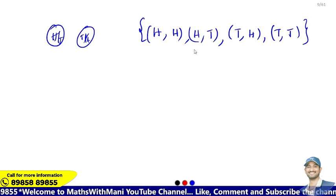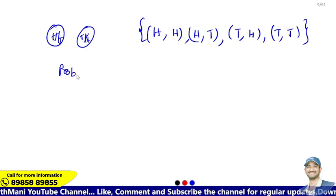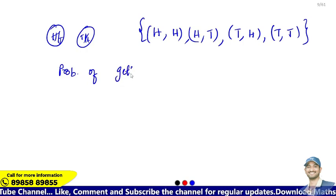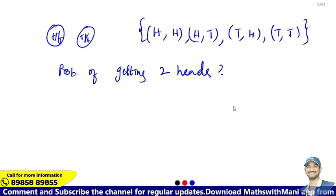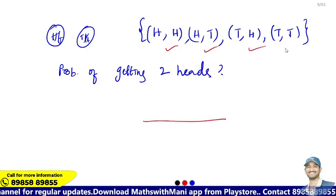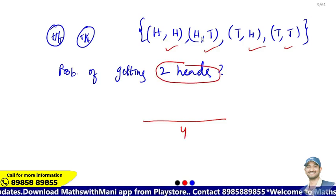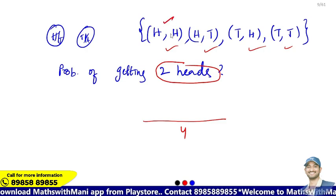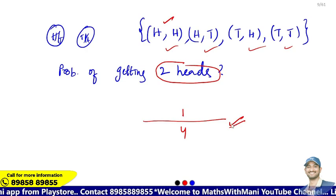The total number of outcomes is 4. So the probability of getting 2 heads is 1 by 4 when you toss 2 coins simultaneously.